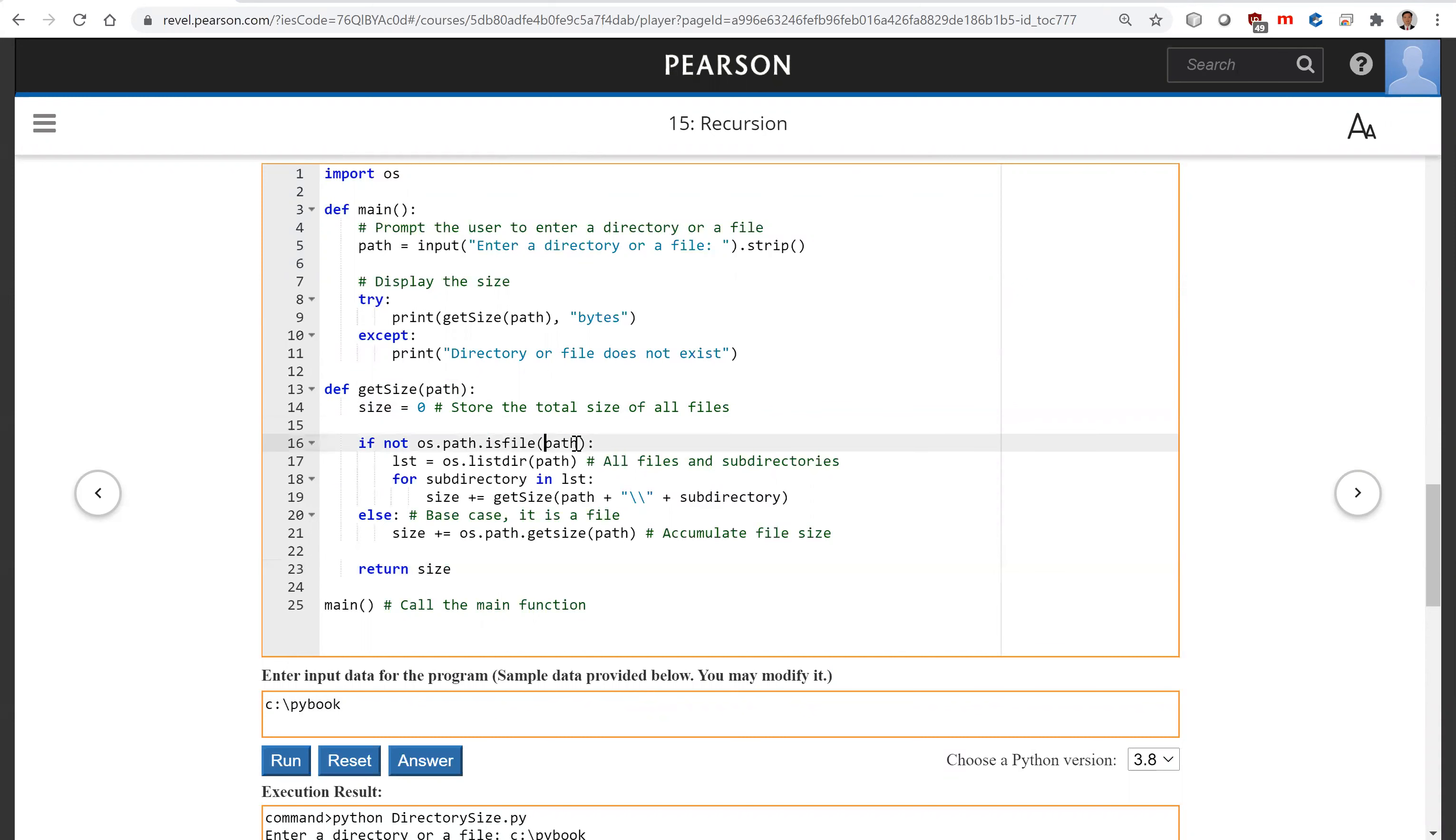So look at the path here. You enter this path. Is this path a file? If it's not a file, we are going to get all its components under the directory using os.listdir.